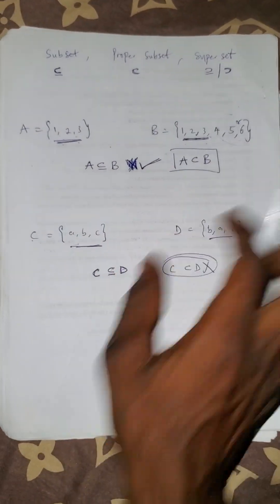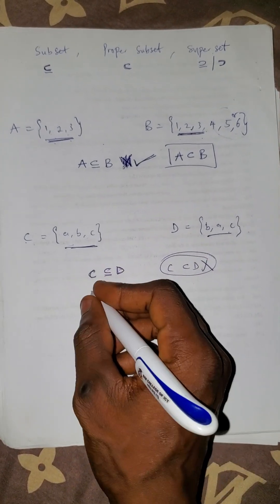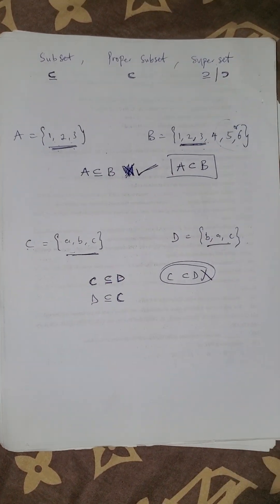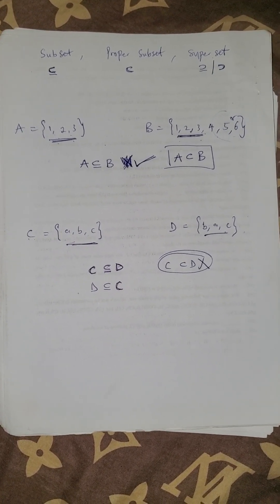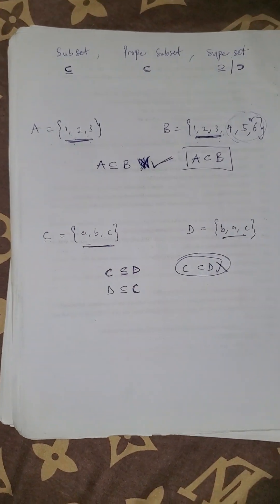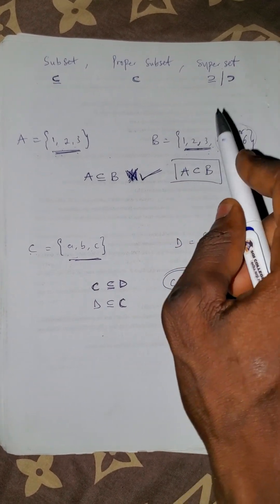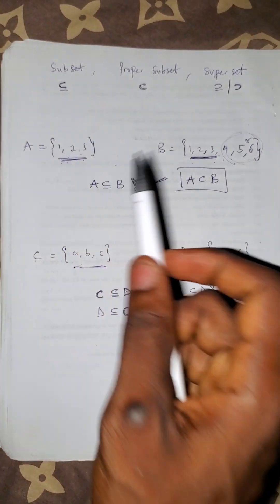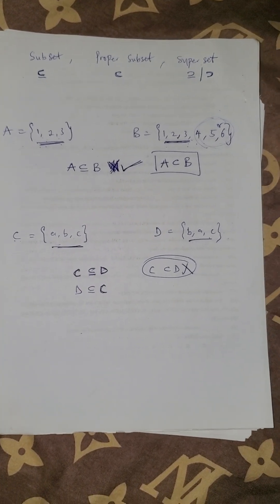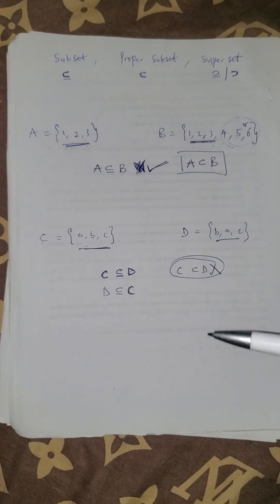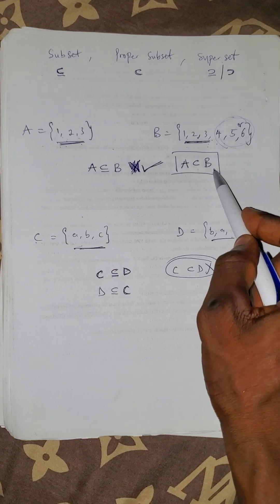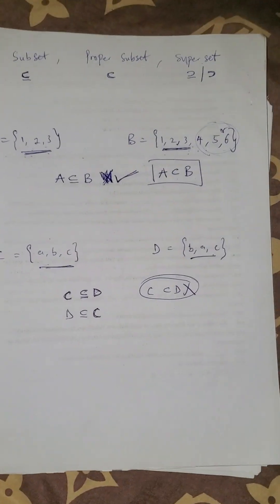Whenever the sets are equal, we can say C is a subset of D, or D is a subset of C — it is the same thing. But in a case like A and B, you can say A is a subset of B, but on the normal, proper way to write it, you must write it as A is a proper subset of B, because there are some elements of B that cannot be found in A. If you say A is a subset of B, you are right but incomplete. If you say A is a proper subset of B, then we understand that all elements of A are in B, but there are some elements of B that cannot be found in A. That is the meaning of proper subset.